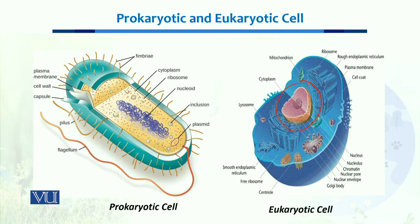In prokaryotes, no nucleus is present and their genetic material is simply present inside the cytoplasm in a specialized place which is called the nucleoid.